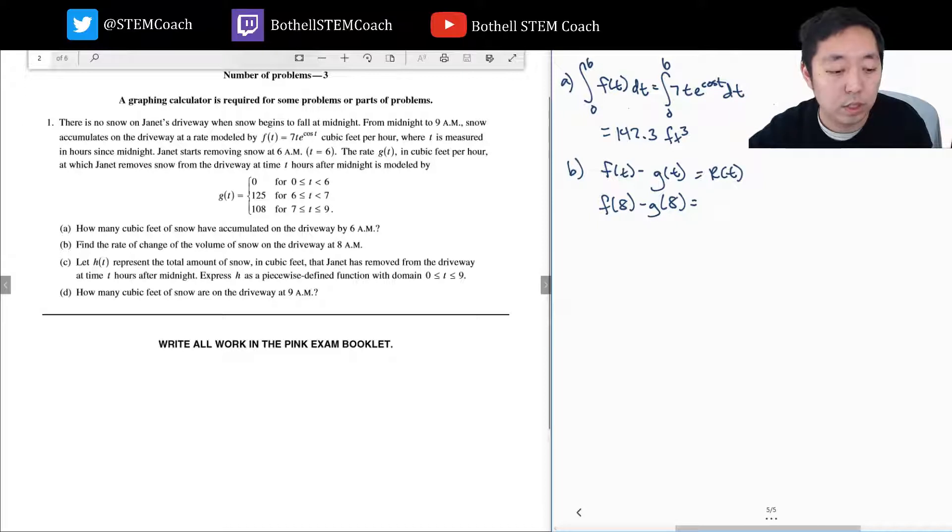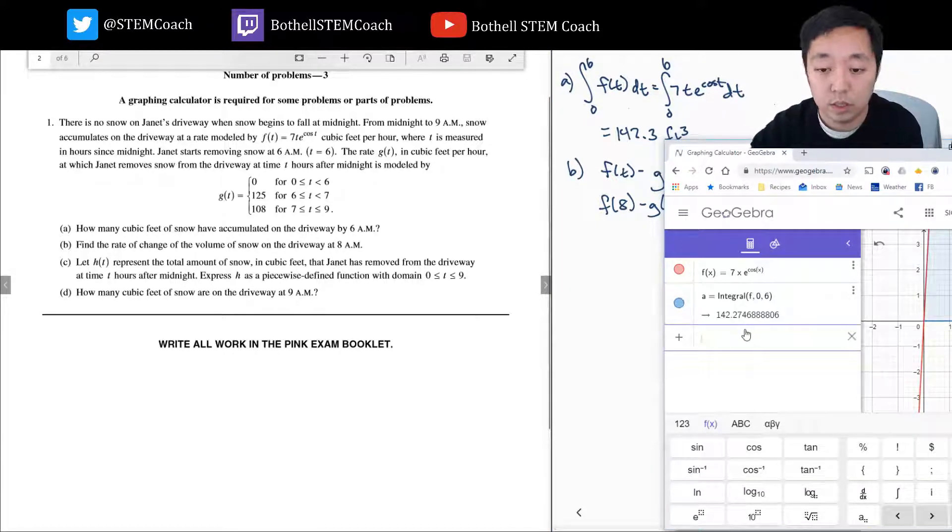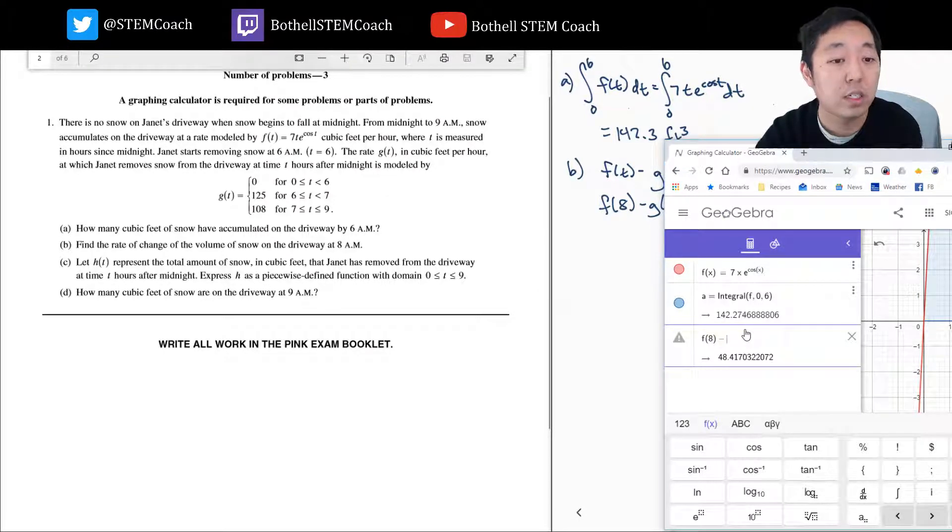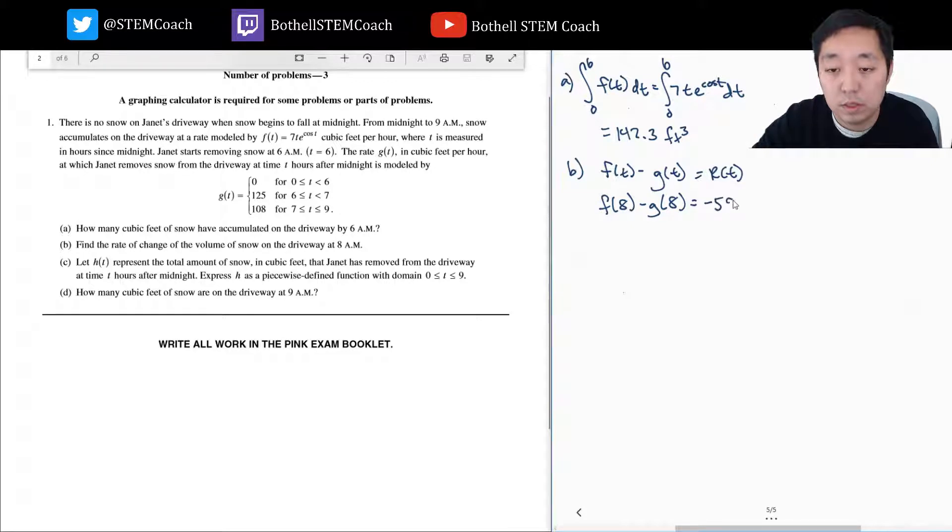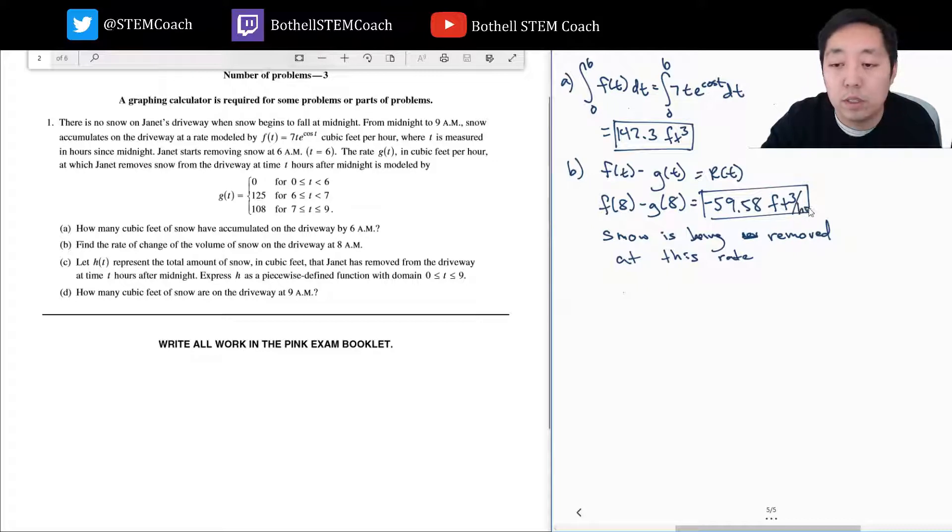At 8 a.m., so we use our calculator again. I'm going to do f(8) minus g(8) is 108, so we're removing snow at 59.58 cubic feet. I would say snow is being removed at a rate of - this is cubic feet per hour, because t is in hours, so it's cubic feet, the change in volume versus the change in time. Time is in hours, so cubic feet per hour.